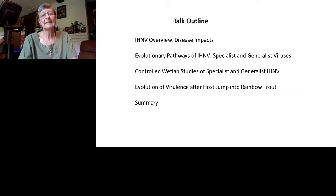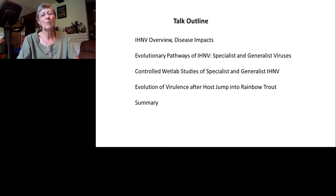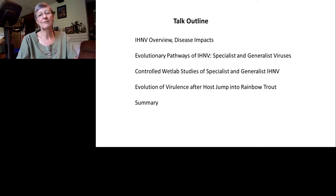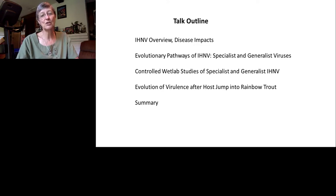Here is an outline of my talk today. First, I'll give an overview of IHN virus and the disease impacts it causes globally. Then we'll look at the evolutionary pathways that have generated specialist and generalist viruses. After that, we'll look at controlled wet lab studies to determine what makes a virus a specialist versus a generalist. And finally, I'll briefly describe a new project on virulence evolution after a host jump into rainbow trout.